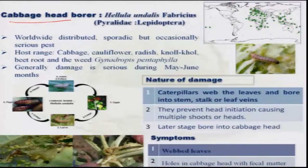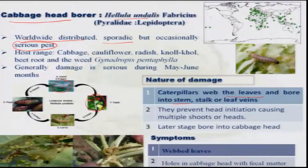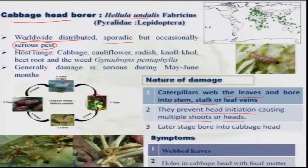The cabbage head borer, Hellula undalis, also has a worldwide distribution but is sporadic in nature, only occasionally becoming a serious pest. The moth lays a few eggs at a time, and the larvae generally web the leaves and bore into the stem or stalk, preventing head initiation and causing multiple shoots or heads. At the button stage, they bore into the cabbage head and completely prevent head formation.